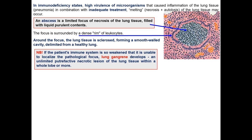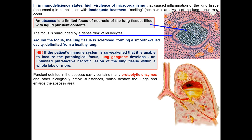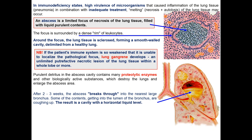If the patient's immune system is so weakened that it is unable to localize a pathological focus, lung gangrene develops — another pathological type of purulent lung disease. Gangrene is an unlimited progressive necrotic lesion of lung tissue within a whole lobe or more. In abscesses, purulent detritus in the abscess cavity contains many proteolytic enzymes and other biologically active substances which destroy the lung and enlarge the abscess area.